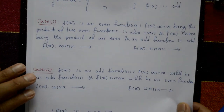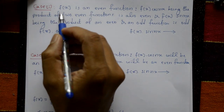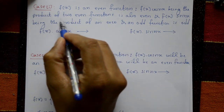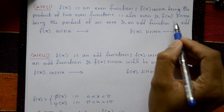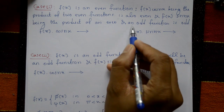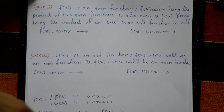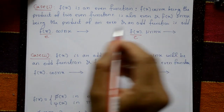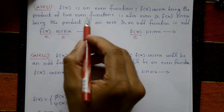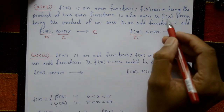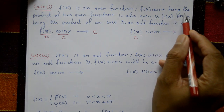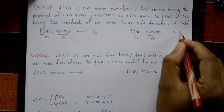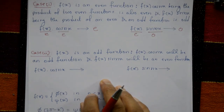Case one: f(x) is an even function. Then f(x)·cos(nx), being the product of two even functions, is also even. And f(x)·sin(nx), being the product of an even and an odd function, is odd. The product of two even functions is even, and the product of an even and odd function is odd.